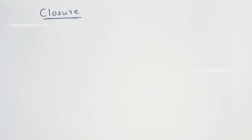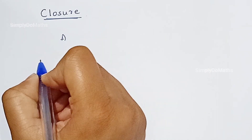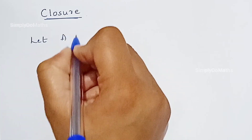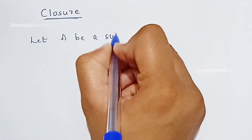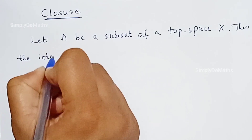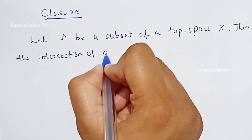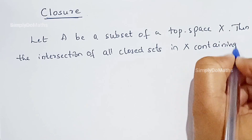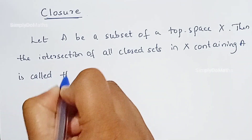Hello everyone. Let's discuss the closure property of a topological space. Let us consider a subset of a topological space — let it be A. Then the intersection of all closed sets in X containing A is called the closure of A.